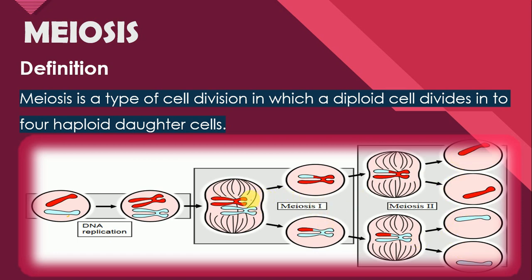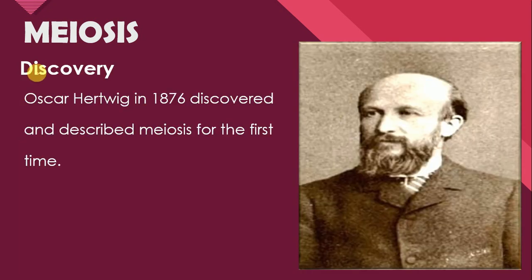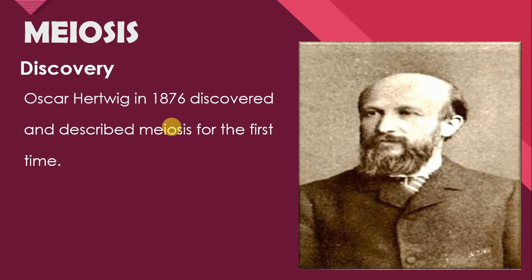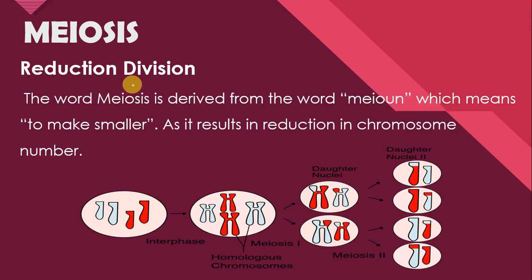Meiosis mitosis se is sense mein different hota hai: meiosis mein single parent cell se four haploid cells bante hain, jabke mitosis ke result mein single parent cell se two cells bante hain. Oscar Hartwig in 1876 discovered and described meiosis for the first time. Oscar Hartwig jo ke ek German physiologist tha, usne 1876 mein meiosis ko first time discover kiya — reduction division.